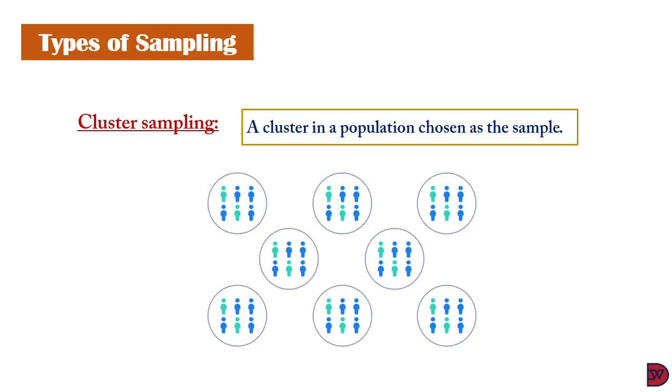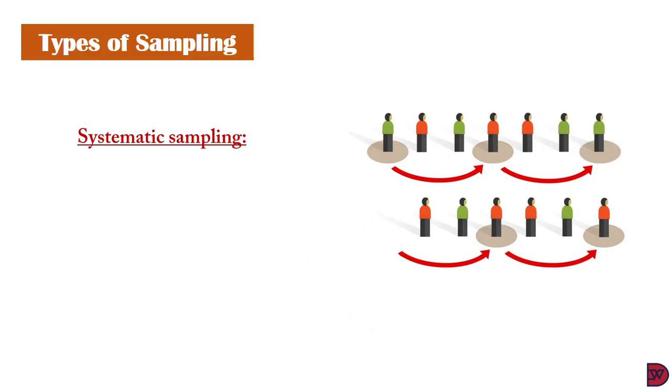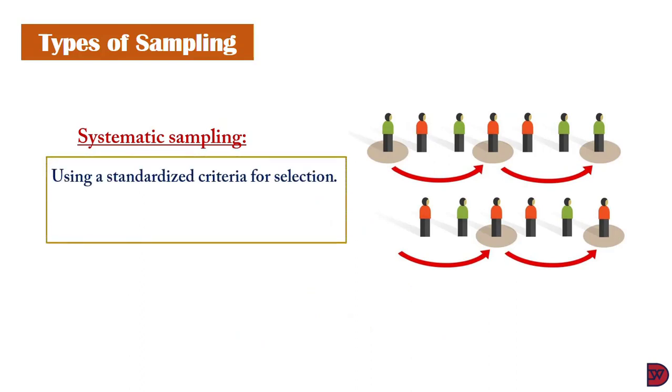The next type is systematic sampling. The sampling is made through a defined criteria. The criteria could be every fourth item in an arranged population, as shown in the diagram.